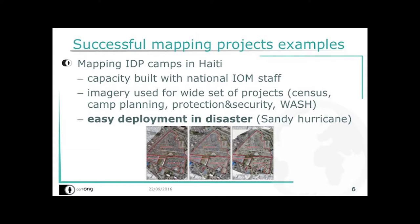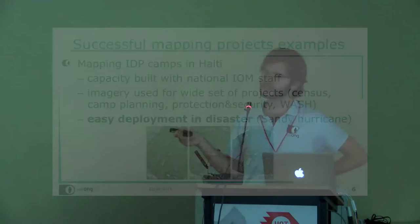The second example is a group of projects in Haiti, with strong involvement of the OSM community and in partnership with the International Organization for Migration. They produced extensive drone imagery used across a wide set of projects including census, camp planning, protection, security, and WASH projects. Notably, IOM had built this capacity preemptively for camp planning, but when Hurricane Sandy Erkan hit, having local capacity and drones ready in the field allowed easy deployment — the best humanitarian disaster use case we saw in the whole project.